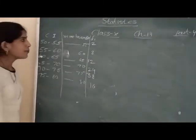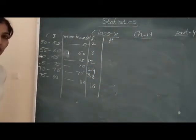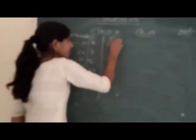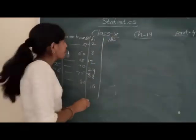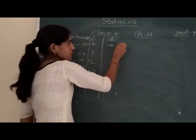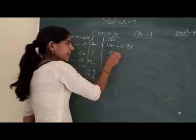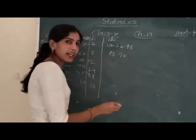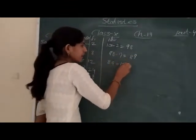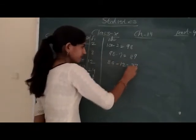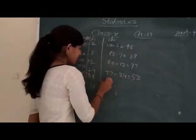Now more than means when we do the class interval, how many total are there? Hundred. More than fifty, how many? Hundred. More than fifty-five, what will it be? Hundred minus two. Ninety-eight. More than sixty, ninety-eight minus eight is ninety. More than sixty-five is ninety minus twelve, seventy-eight. More than seventy is seventy-eight minus twenty-four, fifty-four.